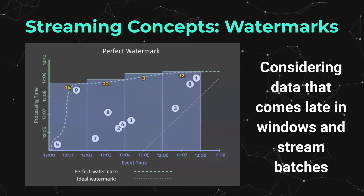Then you have the concept of watermarking. If you're running a window with a start and an end, what happens if a data point that should have arrived during that window comes later? Watermarks allow you to keep a buffer to count data that arrives late within those windows. These are high-level concepts in stream processing that, although outside the scope of this talk, are still important conceptual pieces. In stream processors, many of these components are provided for you so you don't have to deal with the underlying complexities.